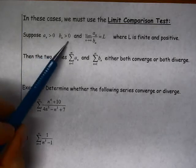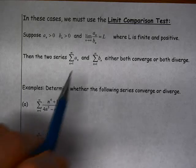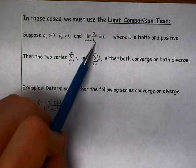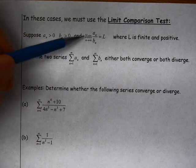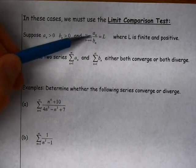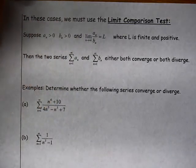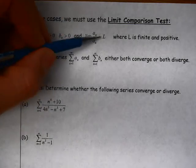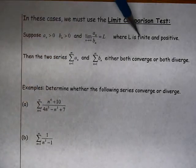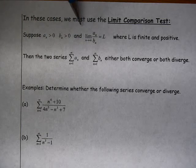These two series both have positive terms and we look at the limit of a ratio of those two terms. So I'm looking at the limit as n approaches infinity of a_n over b_n. It doesn't matter which you put on top — you can do b_n over a_n as well. As long as that limit is finite and positive, then the two series either both converge or both diverge.